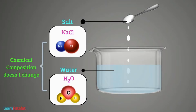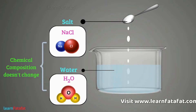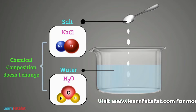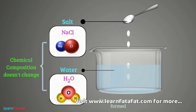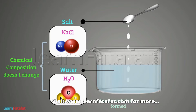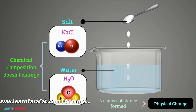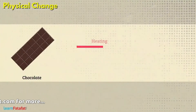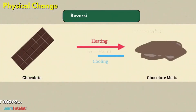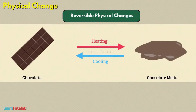If chemical composition is not changing, then this indicates that a new substance is not formed and thus confirms a physical change. Physical changes are generally reversible and the change is reversed by reversing the conditions.